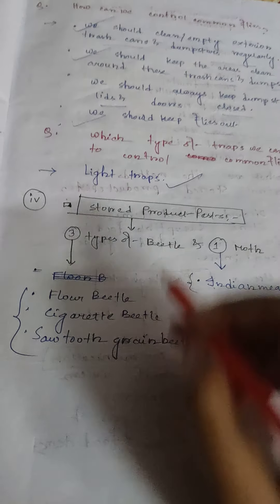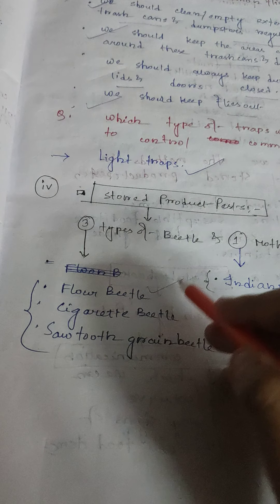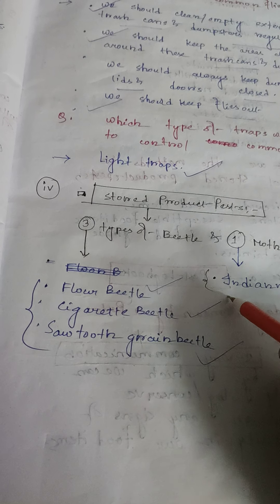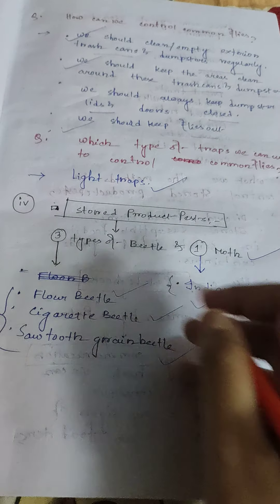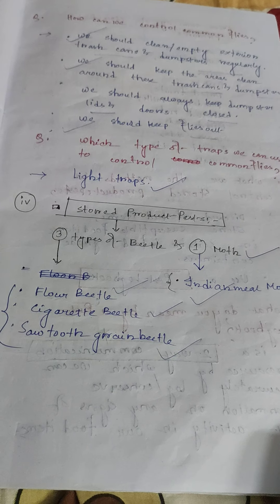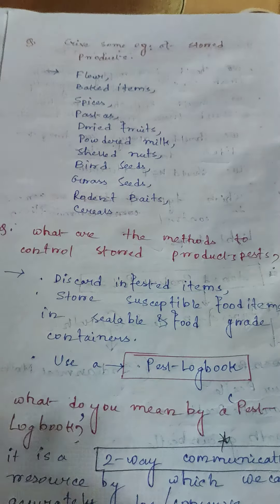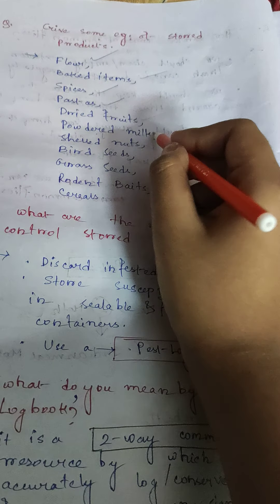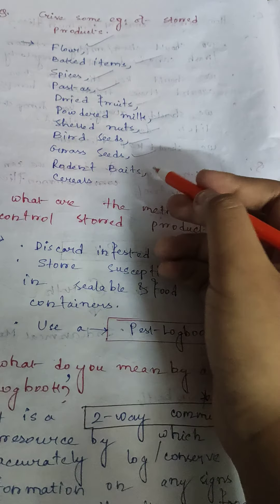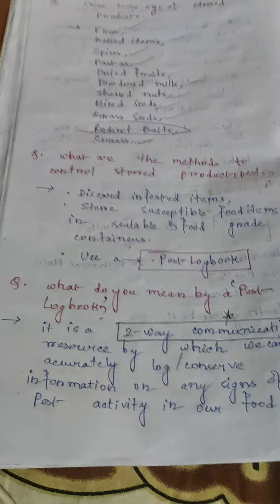Mice cause problems by burrowing or making holes into surfaces. They cause rub marks on different surfaces and leave droppings. Rodents rely on gnawing as a means of survival — gnawing means cutting surfaces. The most important means of survival for rodents is gnawing.